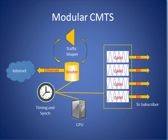Unlike a traditional CMTS, in a modular CMTS architecture, the various parts of functionality — the radio front end, the router, the traffic shaper, and even the timing and sync signals — typically reside on separate shelves.